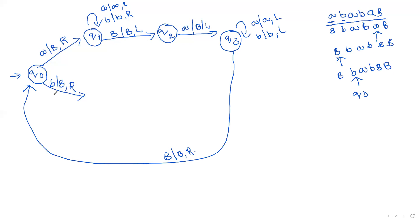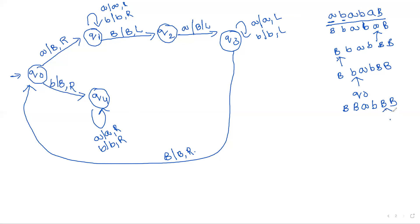On state q0 with input 'b': this leads to state q4. On q4, 'a' is replaced with 'a' and 'b' is replaced with 'b', moving to the right direction. This 'b' is replaced with blank, then 'a' is replaced with 'a', 'b' is replaced with 'b', the process repeats until a blank occurs. At state q4, if a blank occurs, the blank is replaced with blank and then move to the left direction — arriving at some state q5.